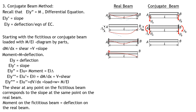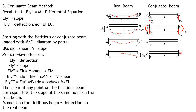For a beam fixed at A and free at B: there is zero rotation and zero displacement at A, so A should be free in the conjugate beam. There is rotation at B, giving shear there, and there is deflection at B, giving moment there — so B should be fixed in the conjugate beam.